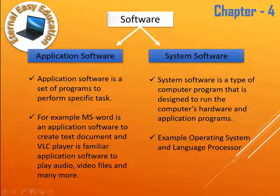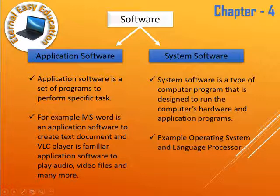Examples of system software include the operating system and language processors. The first screen you see when you start your computer is also a software. The key difference is that system software is used to interact with the hardware and to run other application programs. Without system software, we cannot use application software.